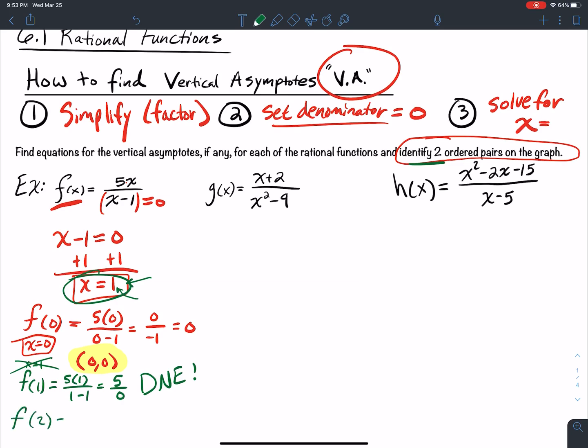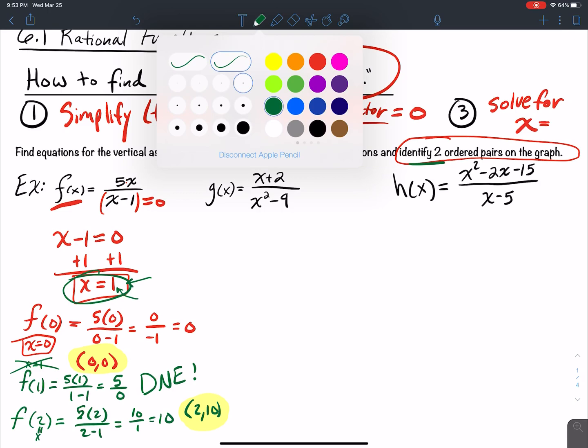Just pick another x value, x equal to 2 will work. If x equals 2, I get 5 times 2 over 2 minus 1, that's 10 over 1, which is 10. So what does that tell me? Another ordered pair is 2 comma 10. So there's two ordered pairs.